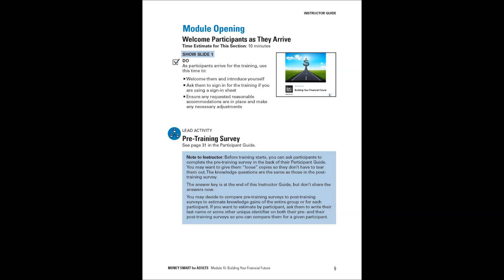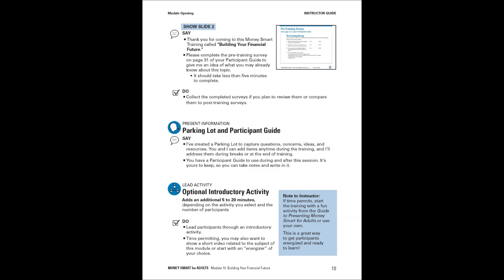When you're ready to begin the training, ask participants to complete the pre-training survey, and show slide two, which gives them a visual of that. You'll want to establish a flip chart poster for a parking lot and inform participants that it's for questions, concerns, ideas, and resources that you will address during breaks or at the end of training. Mention that the participant guide is theirs to use during and after the session. If time permits, start with an optional introductory activity — I highly recommend this as it's a great way to get participants energized and ready to learn. You'll find suggestions in the guide to presenting Money Smart for Adults, or you can use your own.